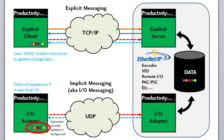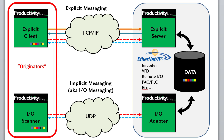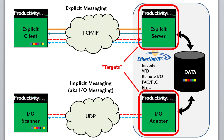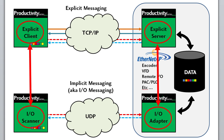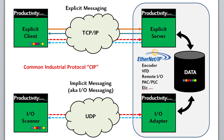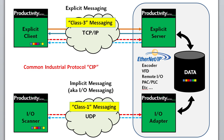A couple of side notes. These are generically called originators because they originate the transfers, and these are generically referred to as targets. Sometimes you'll see folks use these terms interchangeably, so just be aware of that. The Common Industrial Protocol, or CIP, refers to implicit messaging as class 1 messaging and explicit messaging as class 3 messaging, so you may hear those terms used sometimes too.